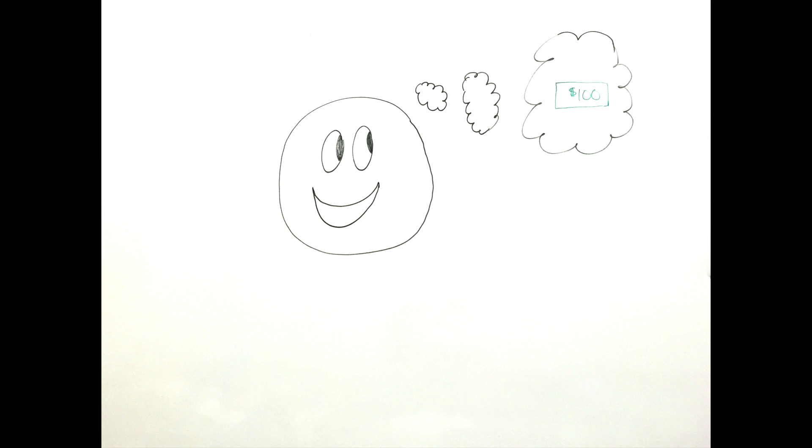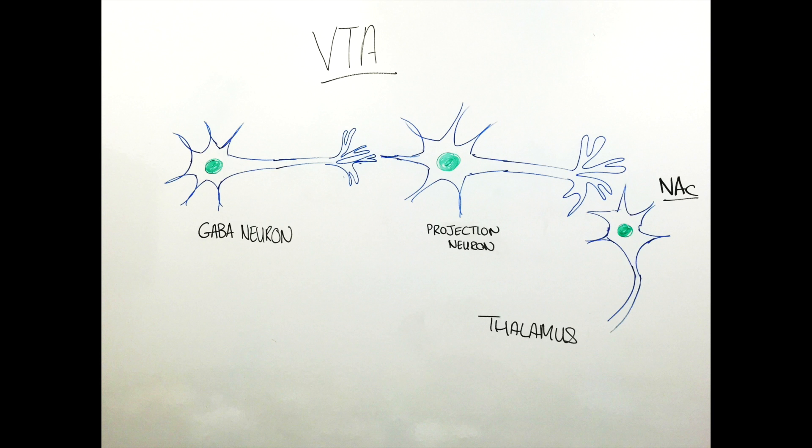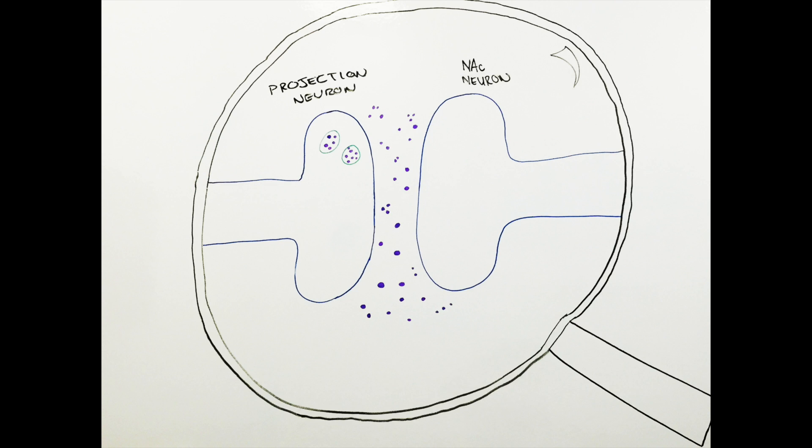Once the reward is removed, the GABA neuron will be activated again. This means the VTA projection neuron will no longer be able to release dopamine. However, there is still dopamine floating around in the space between the neurons that needs to be removed so that the signal can be terminated and the dopamine can be reused.